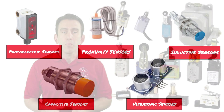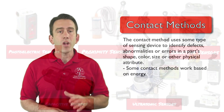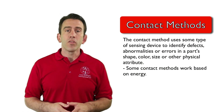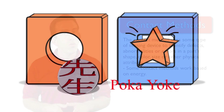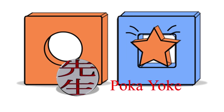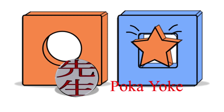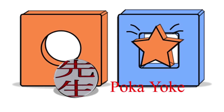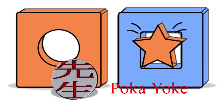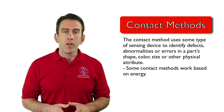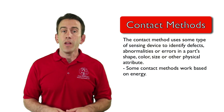Limit switches and proximity sensors are oftentimes used to gauge how close or far something is from making contact, ultimately preventing an error from occurring. For example, if we want to avoid placing an item incorrectly, we may have an asymmetrical design that allows the part to fit only in the correct orientation. If the item does not fit, it will make contact and prevent the item from going in. The contact method is one of the most frequently used methods in Poka-Yoke.